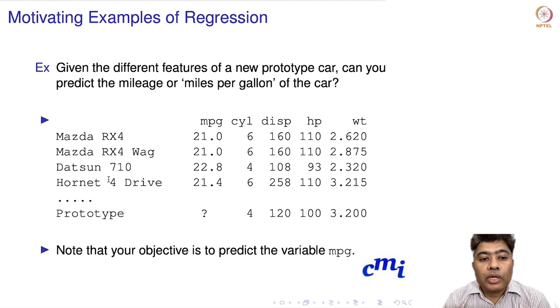There could be another car, Hornet Ford Drive, which has 21.4 miles per gallon, six cylinders, displacement of 258, horsepower 110, and weight 3.215. Now the prototype car you've built may only be available in your computer models—it has four cylinders, displacement around 120, horsepower 100, and weight 3.2.